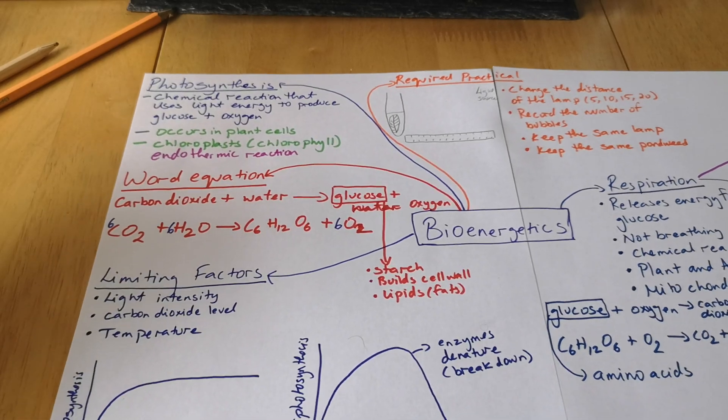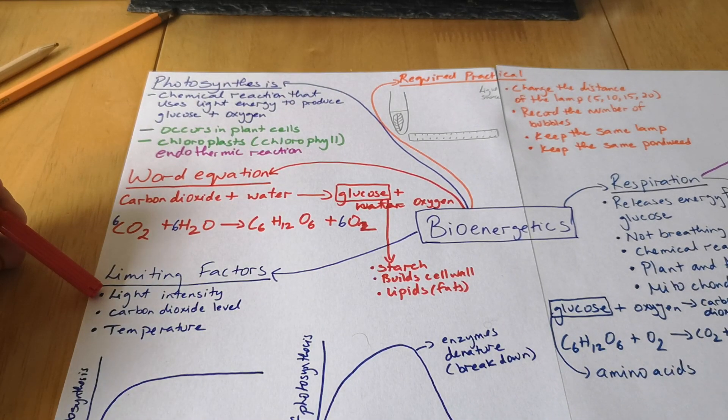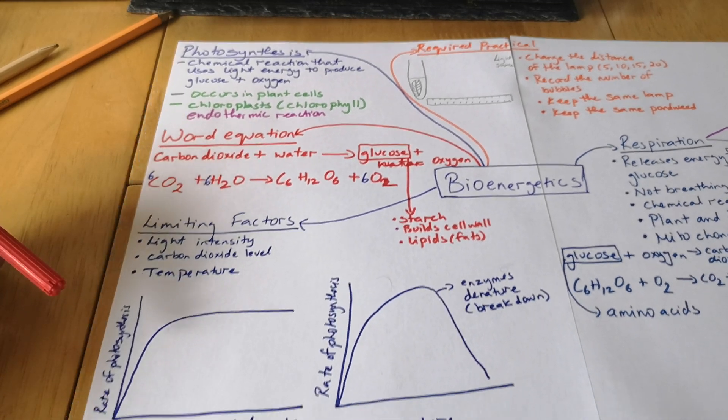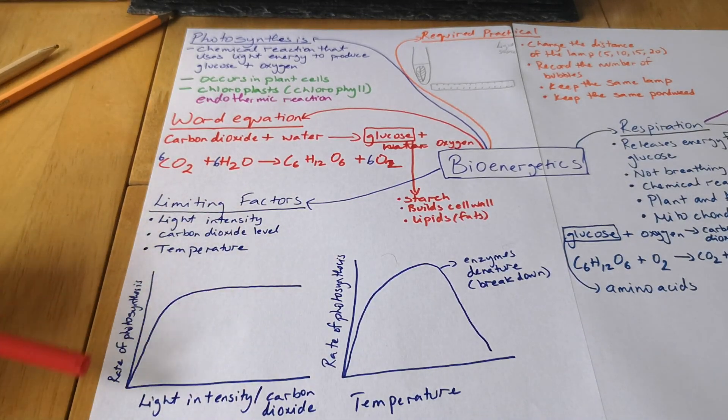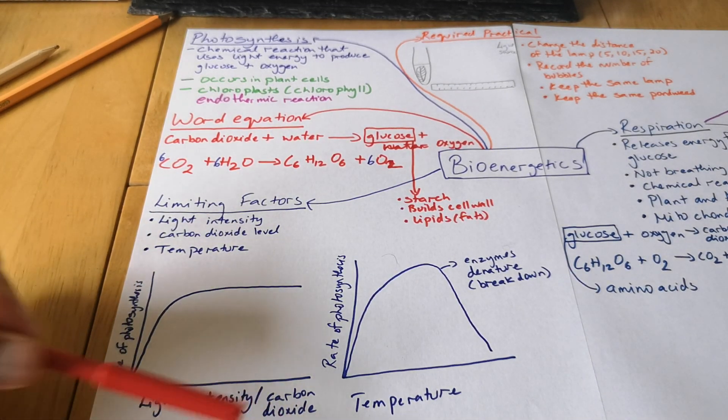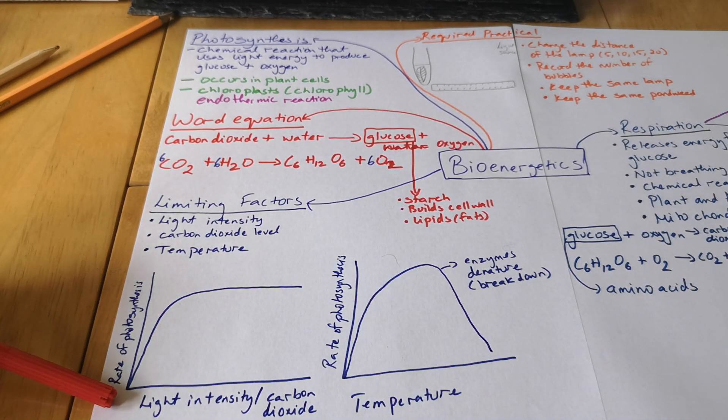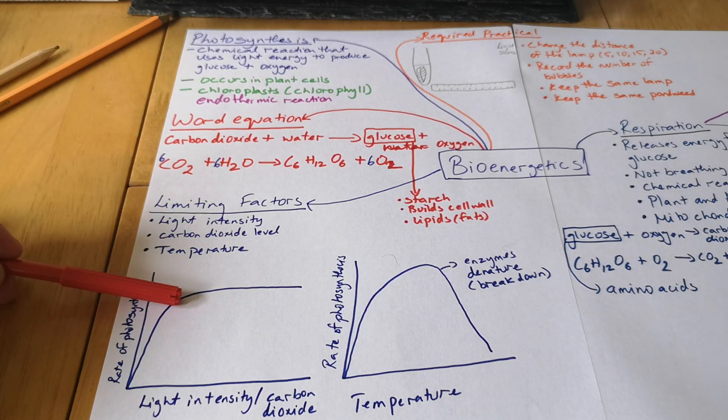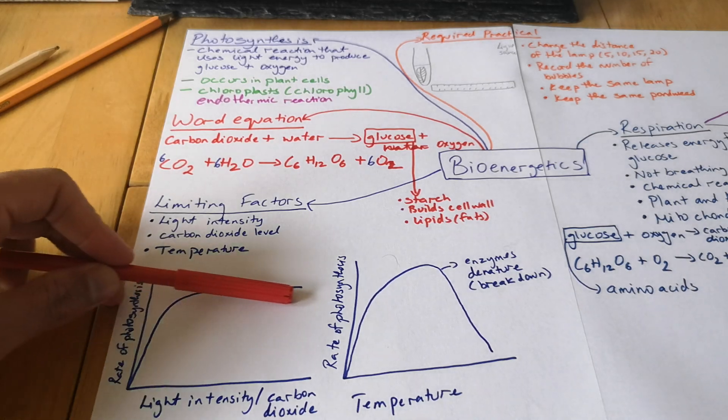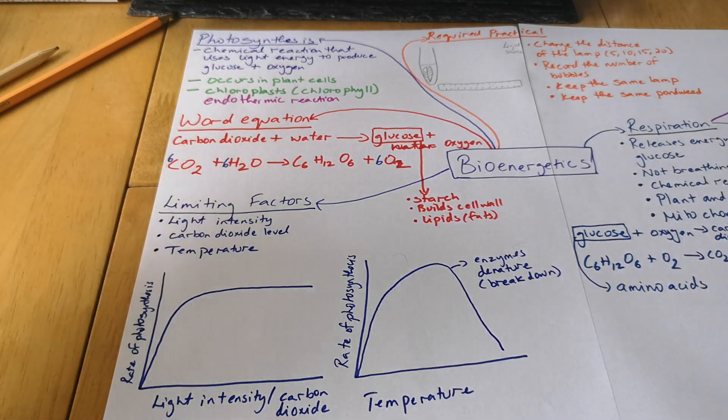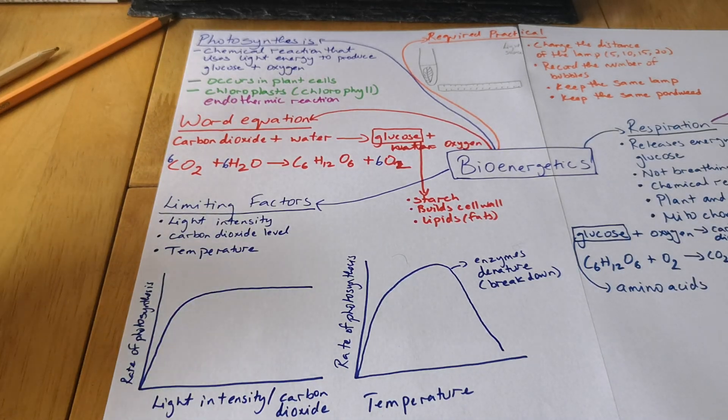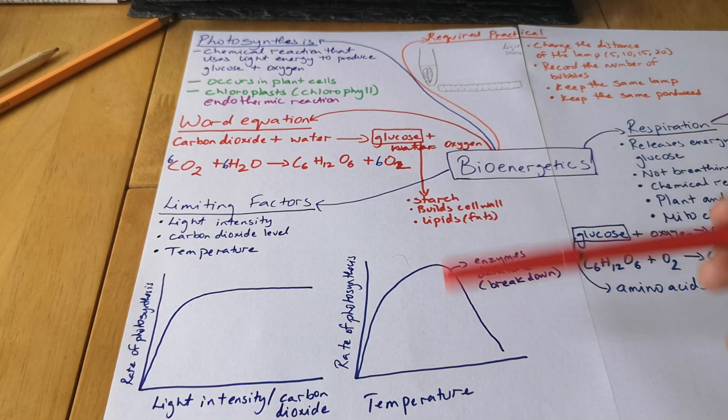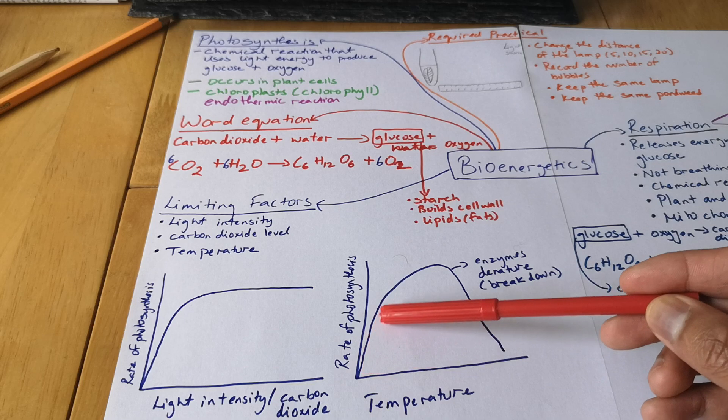Photosynthesis cannot happen all the time. There are some limiting factors, so limiting factors are your light intensity, carbon dioxide levels, and temperature. What I've got on here is the rate of photosynthesis versus light intensity or carbon dioxide. So initially it will produce a lot of glucose to a certain point, and after that point it flattens out. That means it does not stop, it just happens at a constant rate. No matter what you do, it is not going to increase.